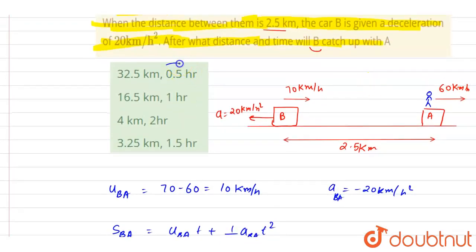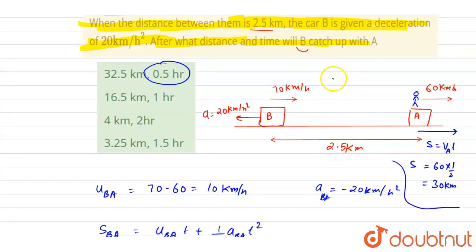So you can just see that this is the option in which half is present. And you can just get the distance A will travel. So in half hour, distance traveled by A is simply the velocity of A into time, that is 60 into half, so it is 30 kilometers. So 30 kilometers is the distance, and you will just add them: 2.5 plus 30 equals 32.5 kilometers.